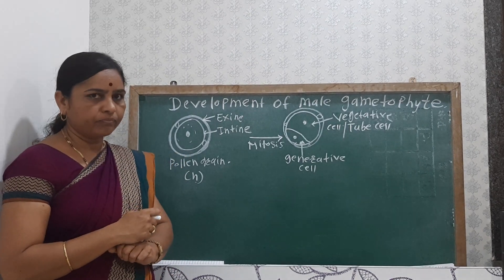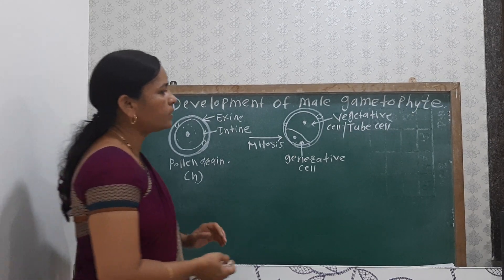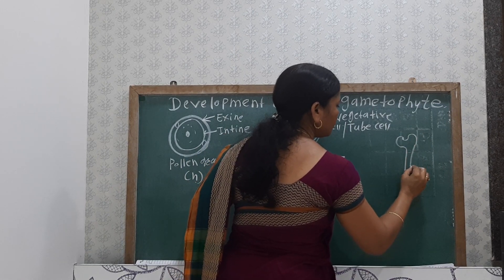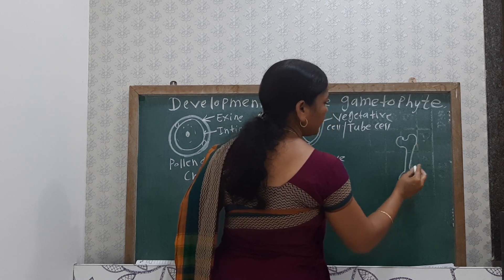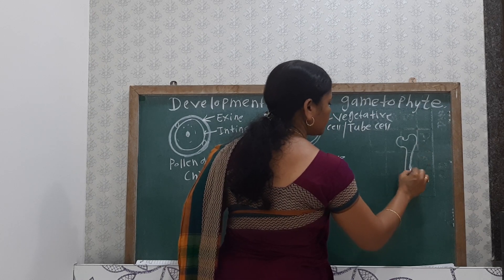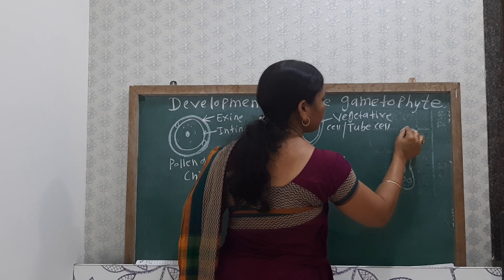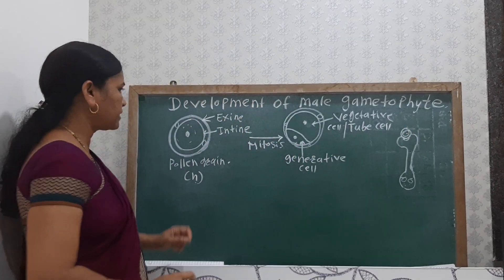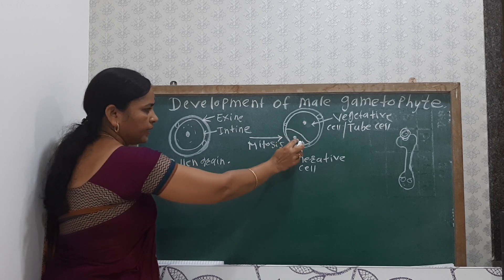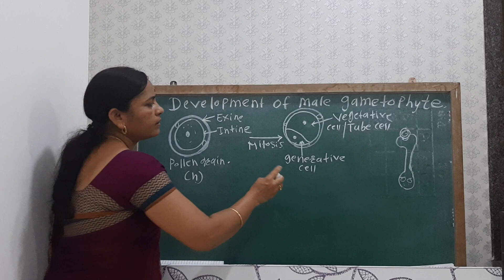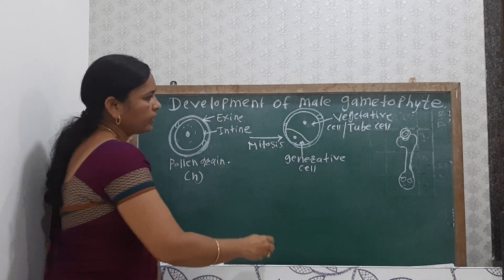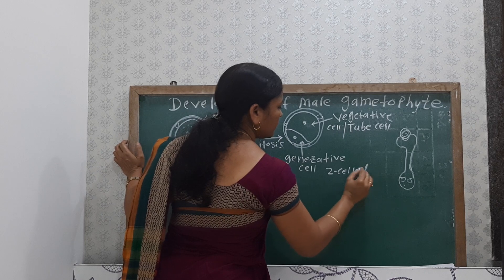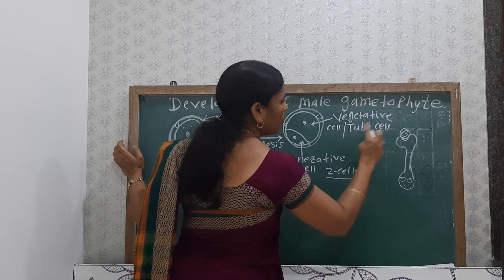After the pollination, when the pollen grains fall on the stigma — here is the female reproductive part: stigma, style, and ovary, inside which there are the ovules — when the pollen grain falls on the stigma, germination takes place after pollination. During germination, the generative nucleus divides, but the vegetative nucleus does not divide. This two-celled pollen grain falls on the stigma.